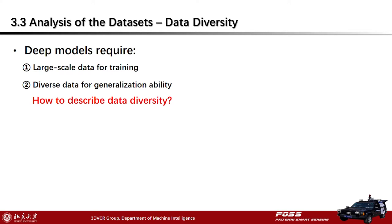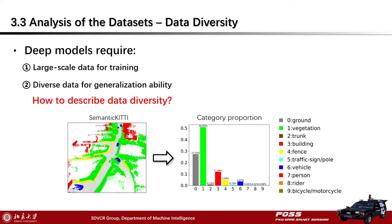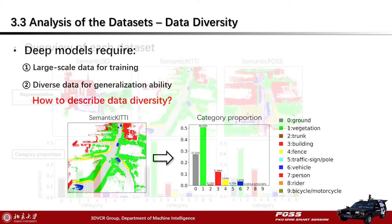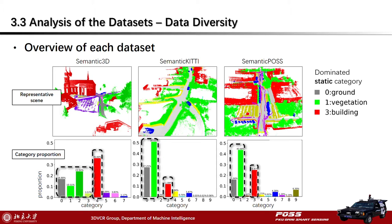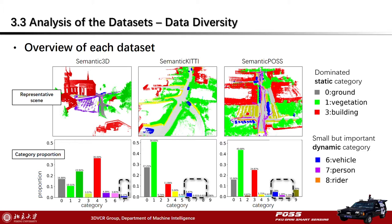To describe the data diversity of a scenario or dataset, we use histograms of category proportion to describe the environment and object distribution — with proportion calculated by voxels. Here we give an overview of each dataset: the first row shows a representative scene, and the second row presents each dataset's descriptors. It is common for all three datasets to be dominated by static categories — ground, vegetation, and buildings. From the view of the whole scenario, small but important dynamic categories like vehicle, person, and rider are not obvious, so we will analyze them separately.